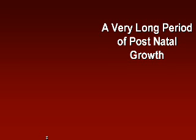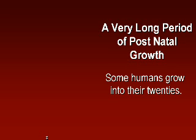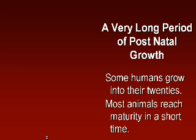Here's another quite different characteristic: a very long period of postnatal growth. After birth, there's a long period of growth in humans — some even grow into their 20s, and the average might be around 16 or 17 years. On the other hand, animals reach maturity in a very short time. A dog can have puppies at about a year old, while humans take much longer to reach maturity.